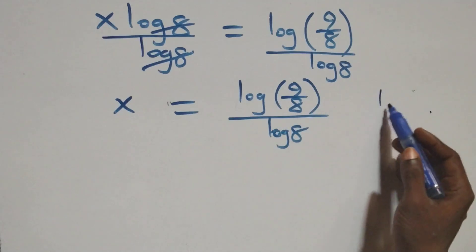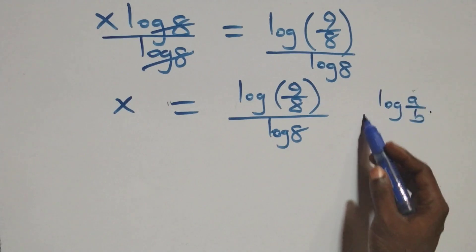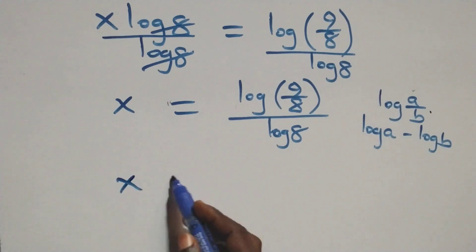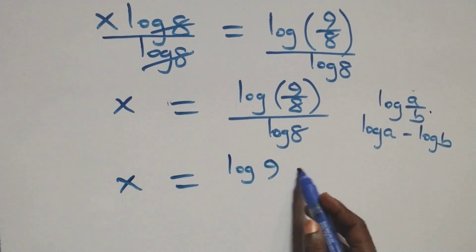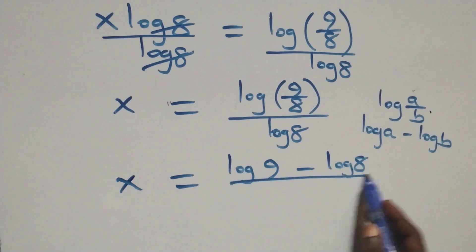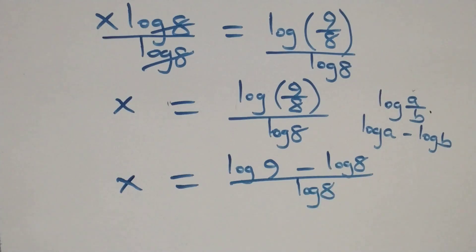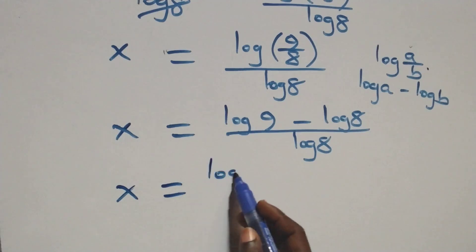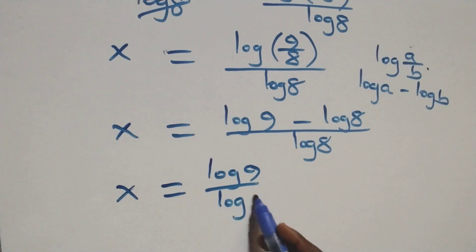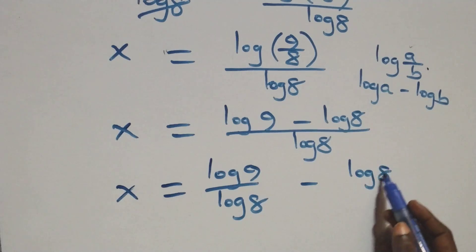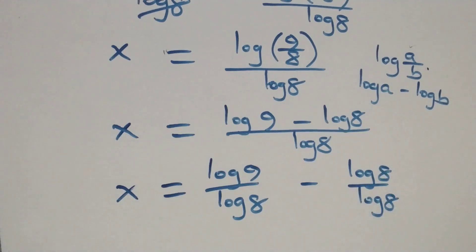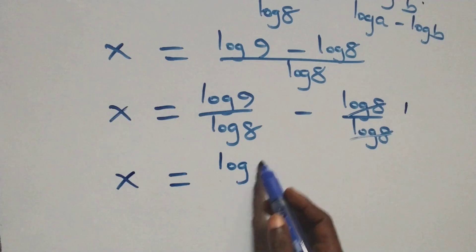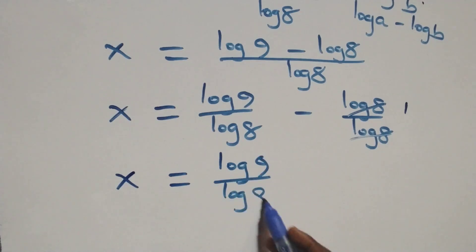This follows from the law of logarithms, where log of a over b equals log a minus log b. So x equals log 9 minus log 8, all over log 8. We separate this into two fractions: x equals log 9 over log 8 minus log 8 over log 8. Since log 8 over log 8 equals 1, we have x equals log 9 over log 8 minus 1.